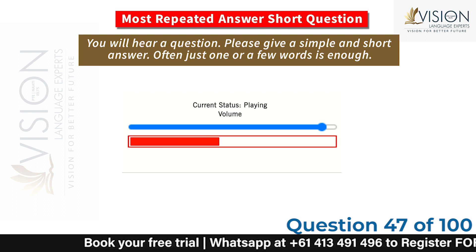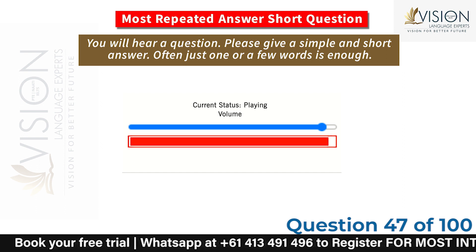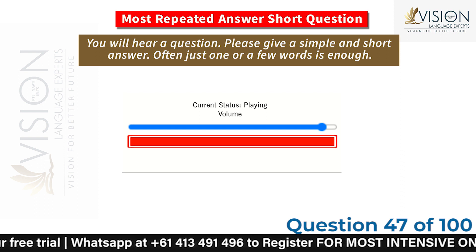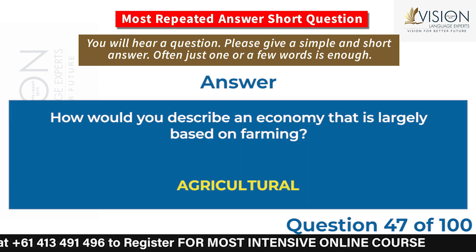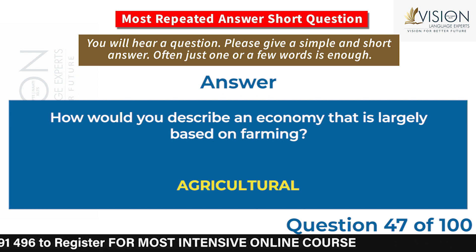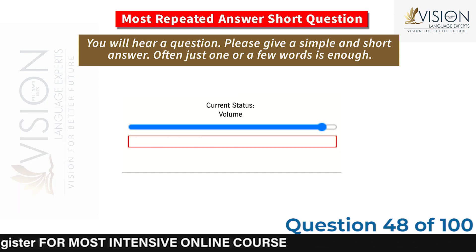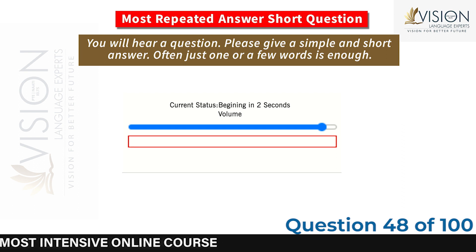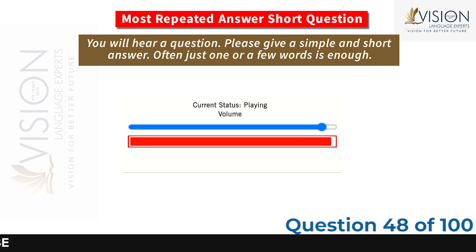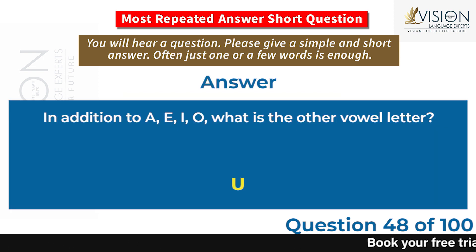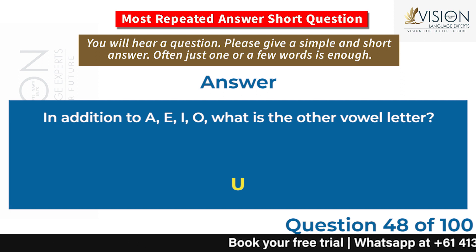How would you describe an economy that is largely based on farming? Agricultural. In addition to A, E, I, O, what is the other vowel letter? U.